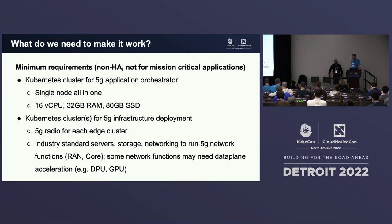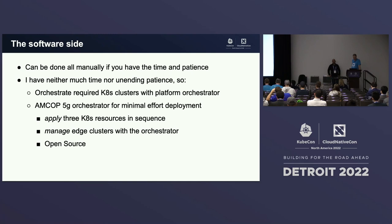Storage and networking also need to be considered — there's a storage component to save persistent data for the environment. Networking for the 5G network functions is also managed by the AMCOP platform. If your network functions need data plane acceleration, for test purposes this is not necessary. On the software side, you could put it all together manually, but I personally do not have a lot of patience or time. Using a component that is already available, that I can download and deploy on my Kubernetes clusters, will make my experience a lot better.